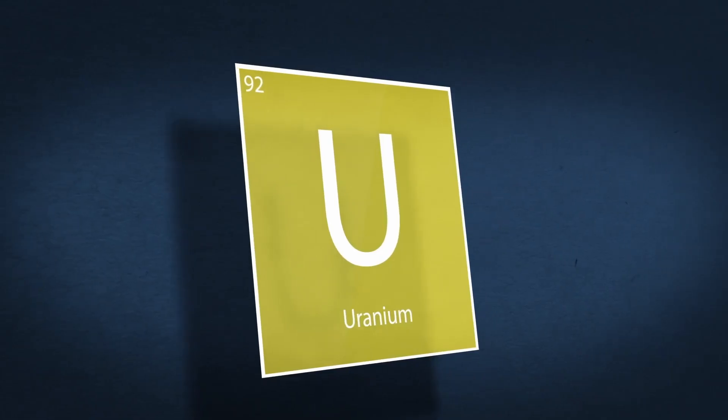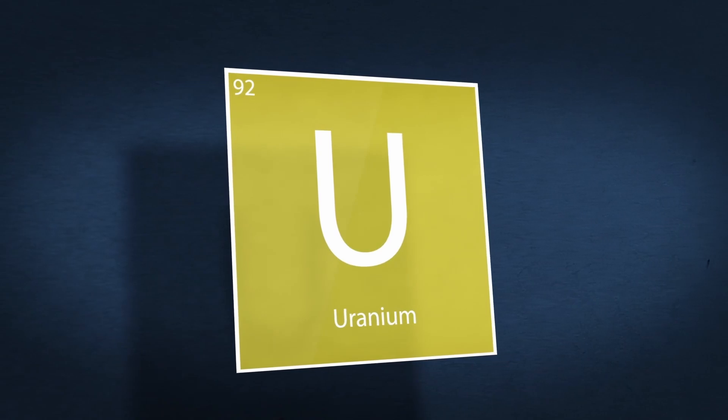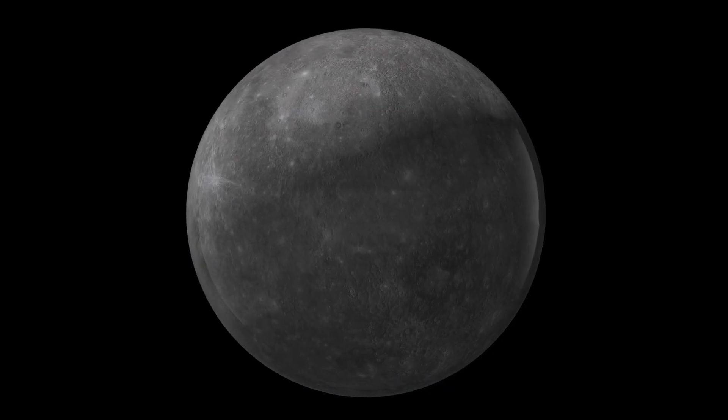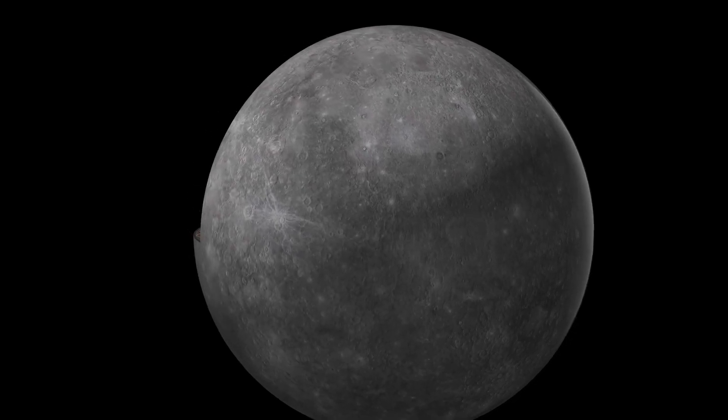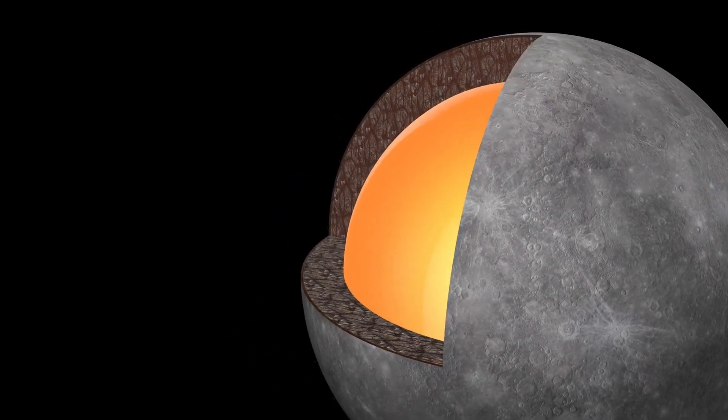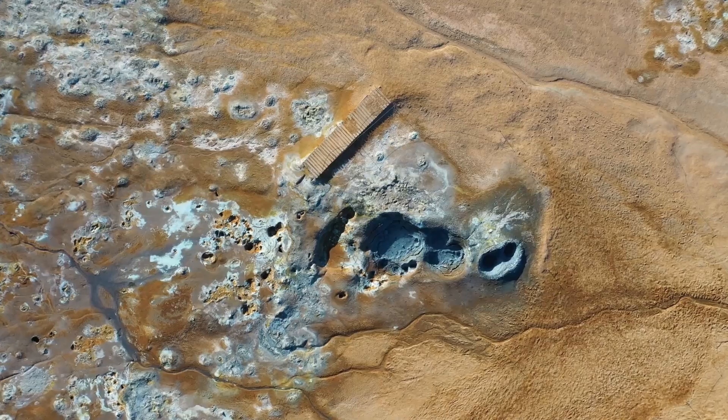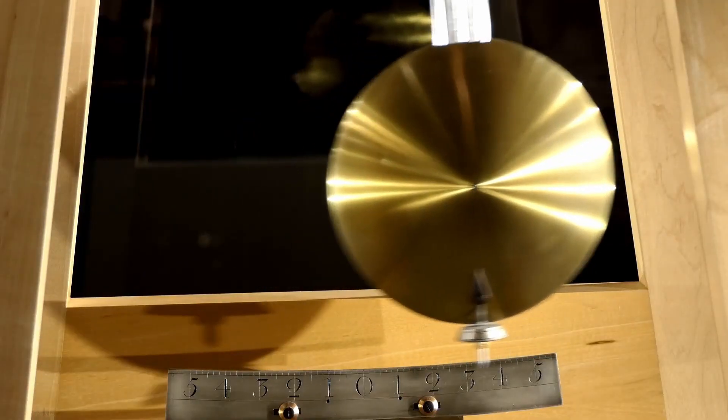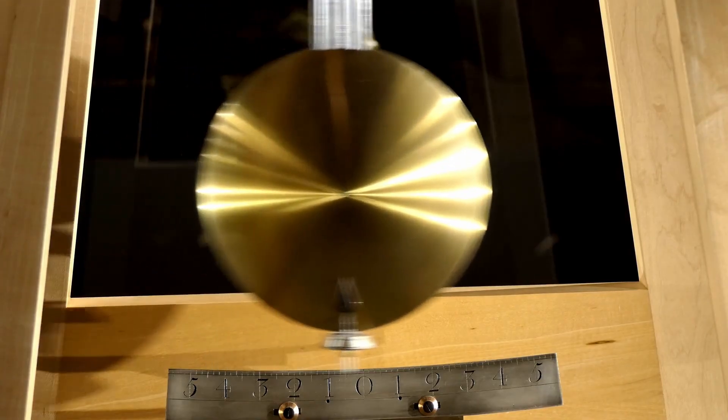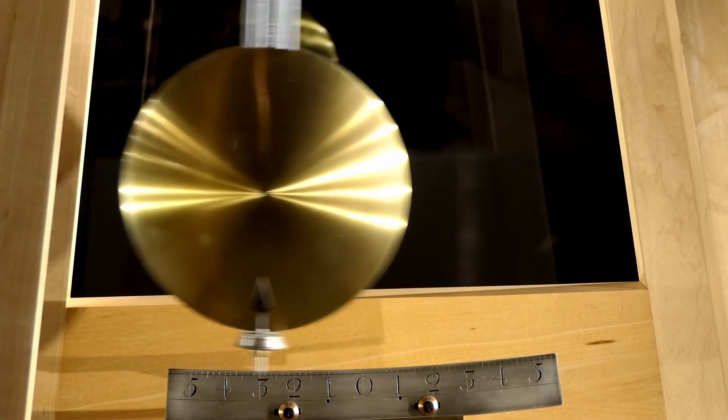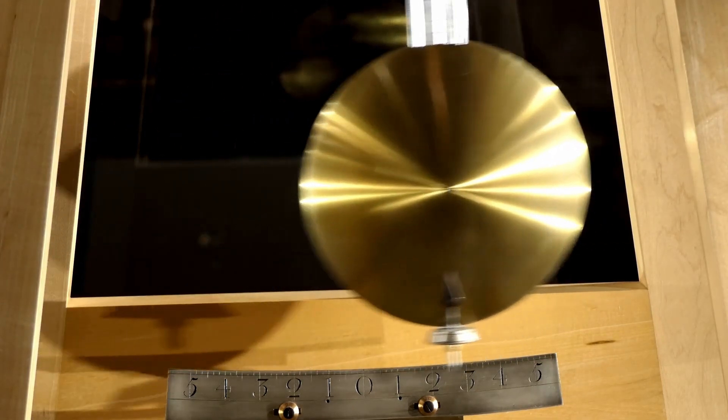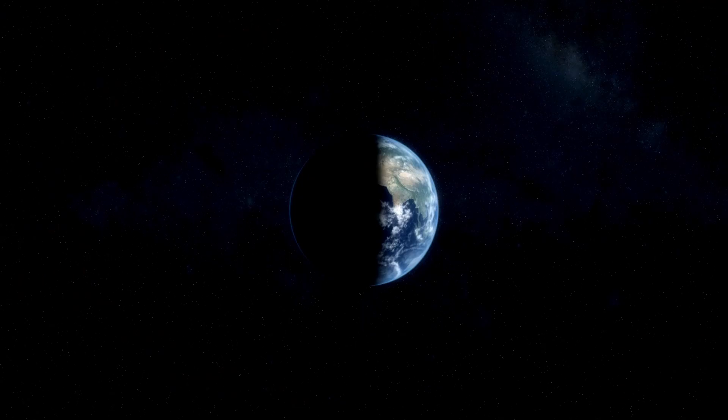And now with 3ATLAS, the same pattern is repeating, but at a scale that leaves no room for doubt. This time the object is massive. If a force is pushing it, that force must be incredibly precise and sustained. It's no longer about one strange object slipping through the cracks. It's about a growing pattern, a sequence. First came Oumuamua, then Borisov, now 3ATLAS. And each time the behavior becomes more extreme, more unnatural. If this were a fluke, it wouldn't be escalating. But it is.